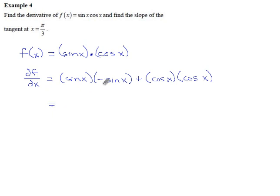If we combine these, we have sine times negative sine, which comes out to negative sine squared x plus cosine squared x.